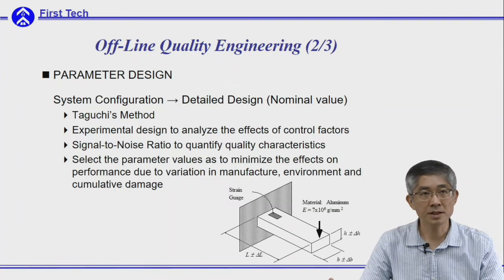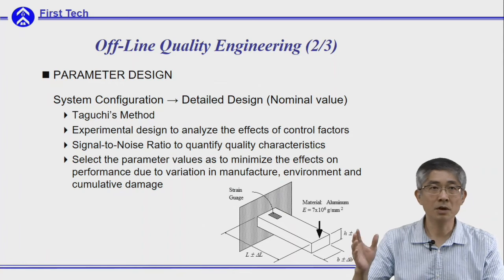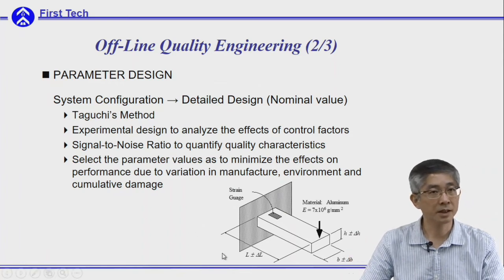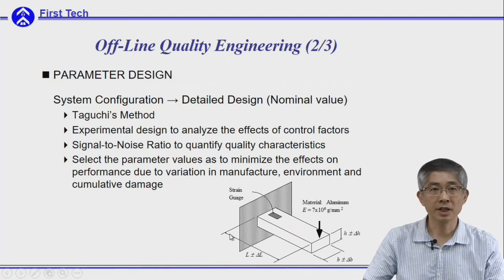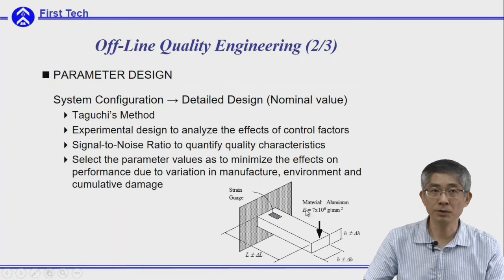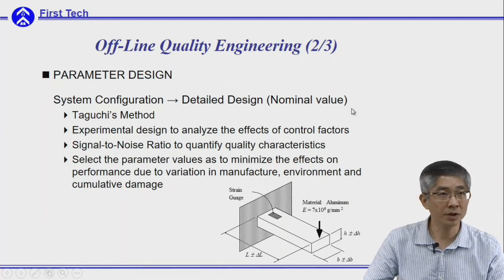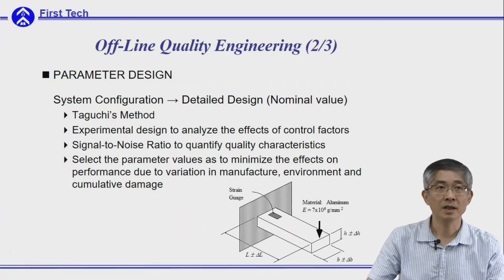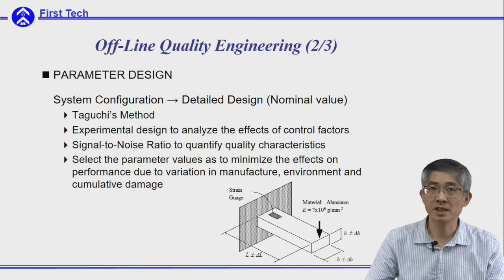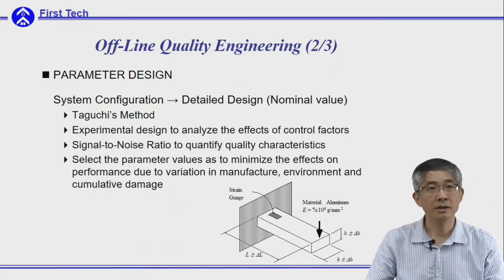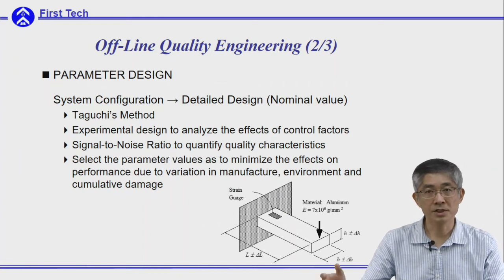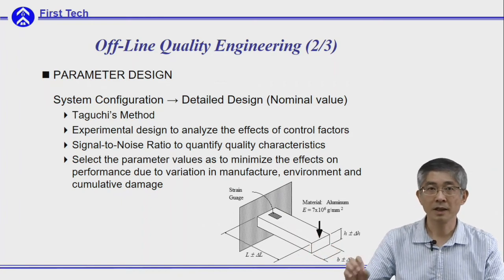After system design, you need to determine the nominal output for your design. For example, if you select the cantilevered spring, at this stage there are several parameters: the length, width, height, or even material. You need to determine the nominal value of these variables. You can use the Taguchi method, and in most cases you need to use design of experiment. You need to consider a good index for quality by considering both the average output and the conformance.